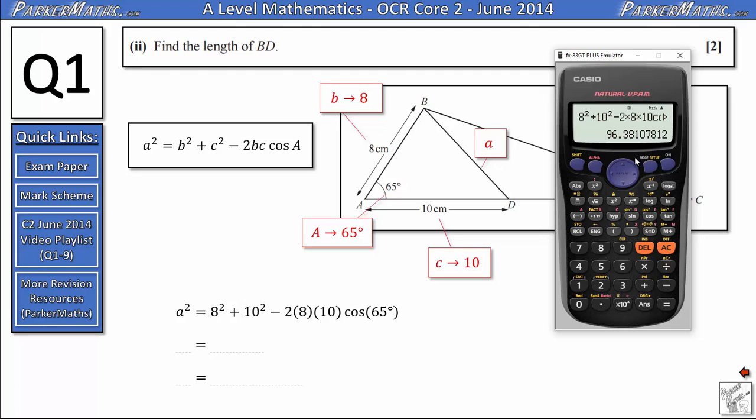And that gives us 96.38 and so on for A squared. Now all we need to do is square root our answer to get A. So the square root of our answer is 9.82 if we round to three significant figures.